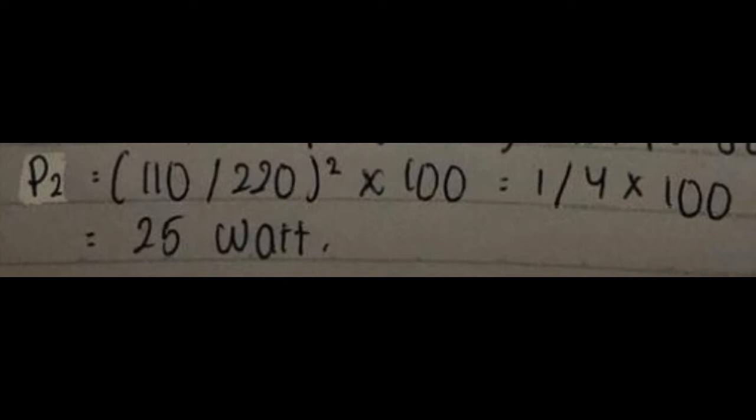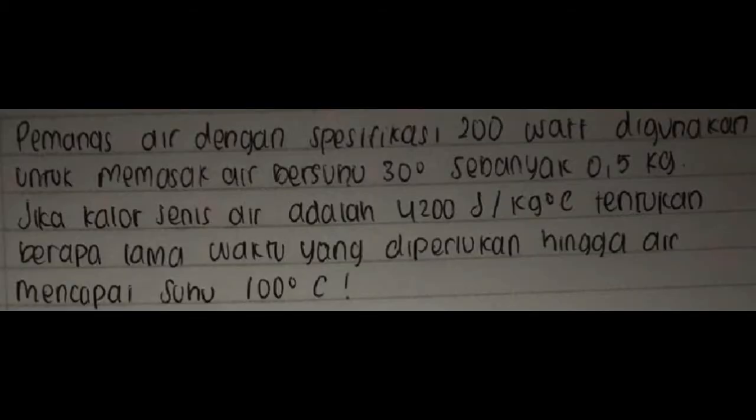Soal 18, pemanas air dengan spesifikasi 200 watt digunakan untuk memasak air bersuhu 30 derajat sebanyak 0,5 kg. Jika kalor jenis air adalah 4.200 Joule per kilogram derajat Celcius, tentukan berapa lama waktu yang diperlukan hingga air mencapai suhu 100 derajat Celcius.